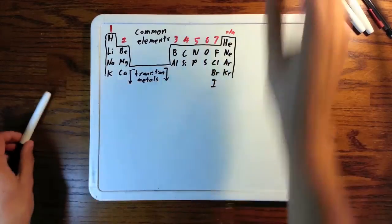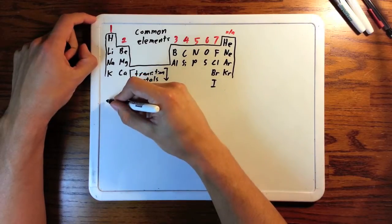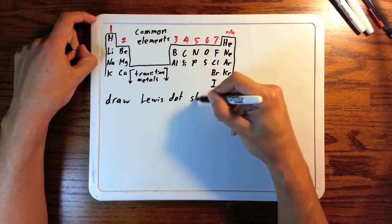We just saw how to draw Lewis dot structures and then how to use formal charge. Now we're going to use both combined to figure out which is the best possible Lewis structure.